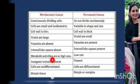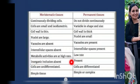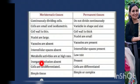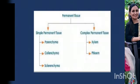Inorganic inclusions are absent in meristematic tissues but present in permanent tissues. The cells of meristematic tissues are undifferentiated — they are not performing particular functions — whereas the cells of permanent tissues are differentiated and assigned particular functions. Meristematic tissue is a simple tissue, whereas permanent tissue can be simple or complex. Now let us see the classification of permanent tissue, which is divided into two broad categories: simple permanent tissue and complex permanent tissue.